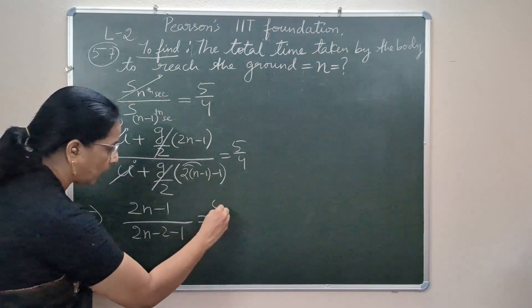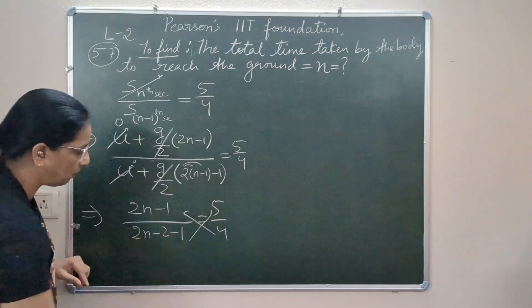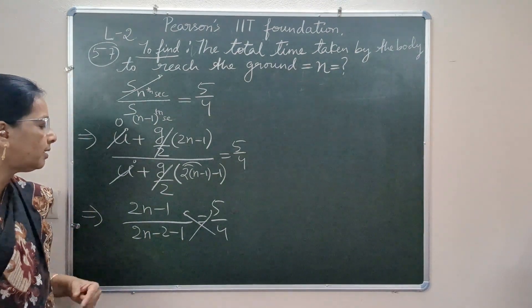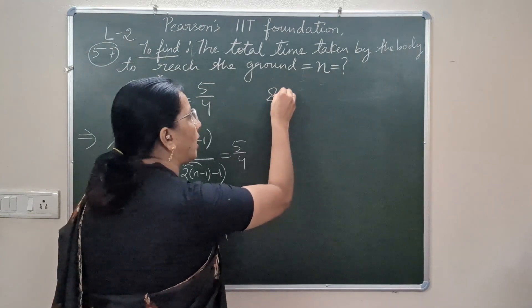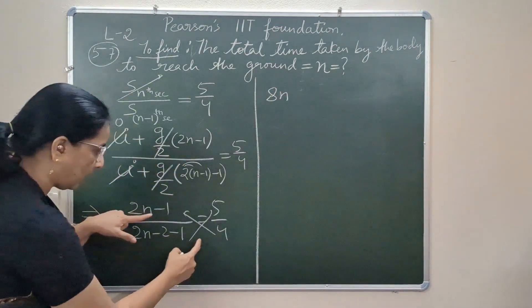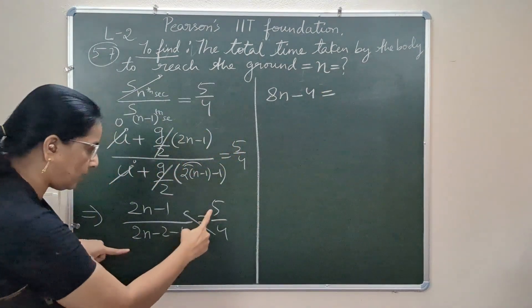So we have 4 times 2n, 4 times 2n is 8n, then minus 4.